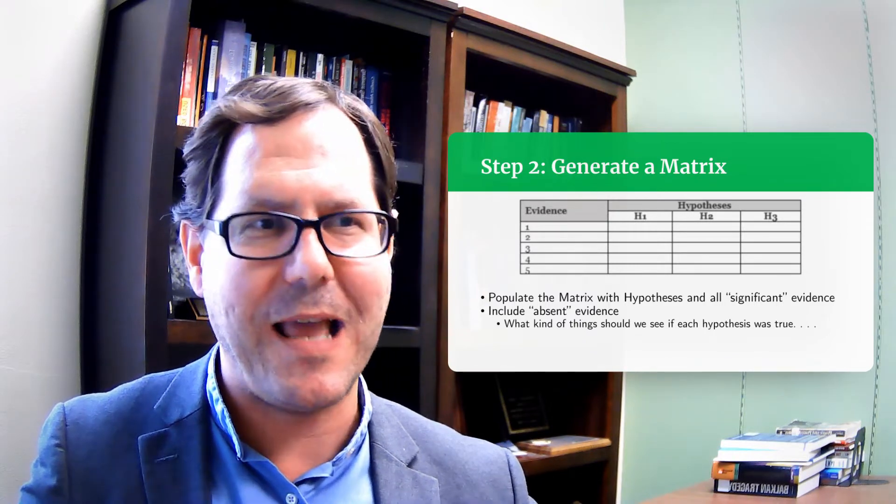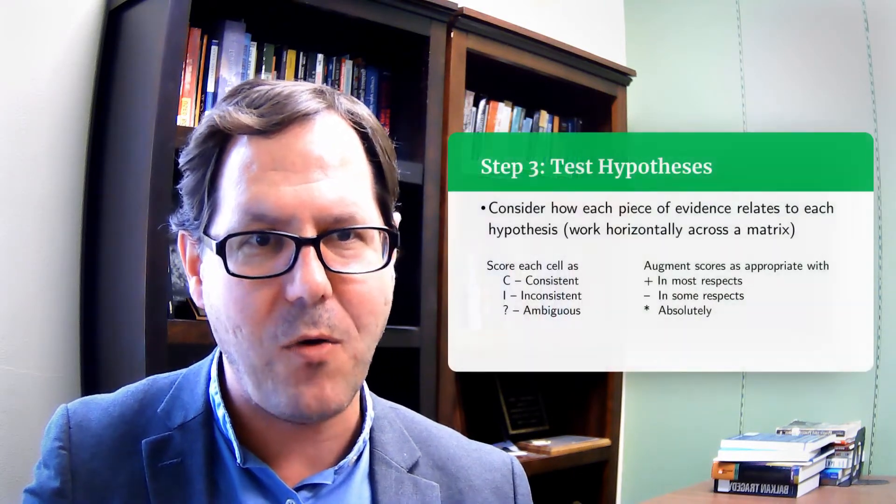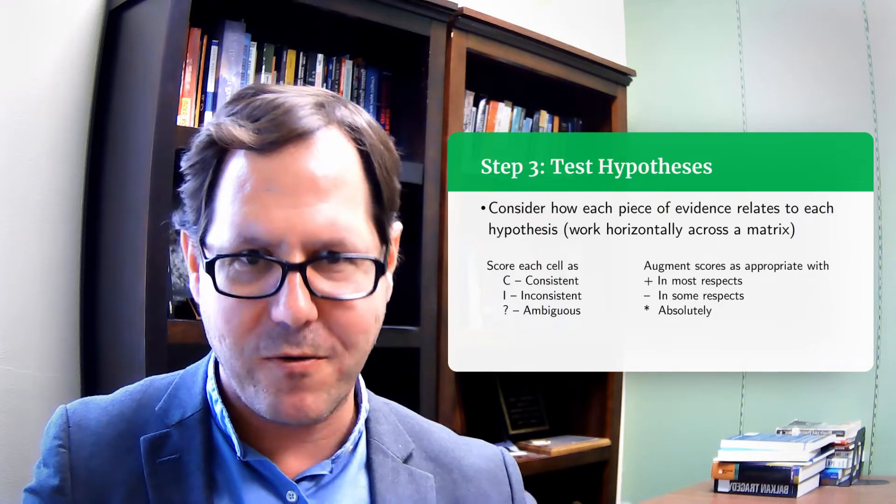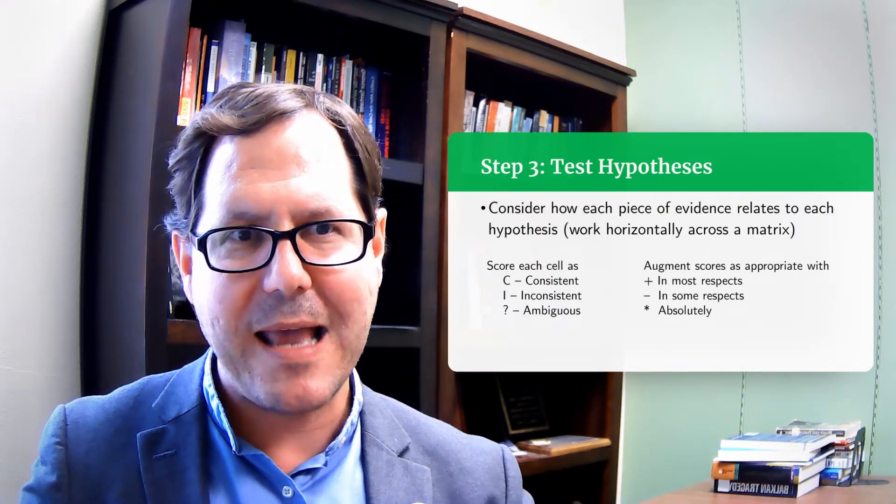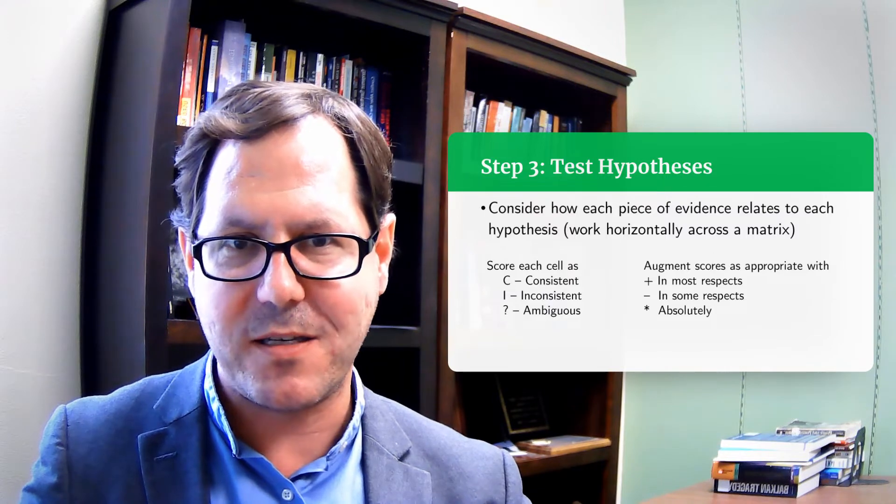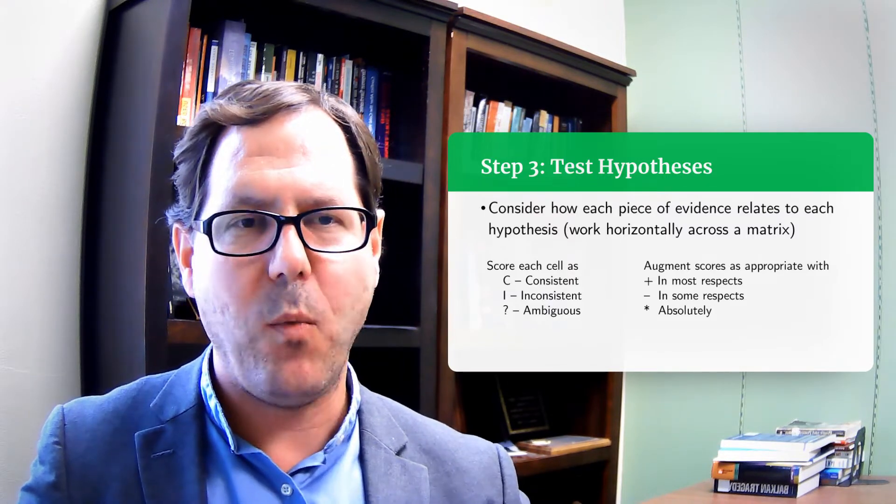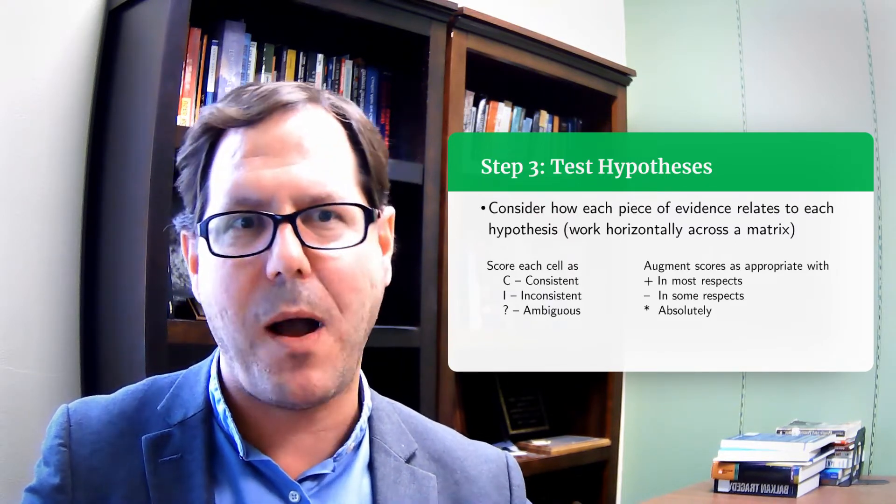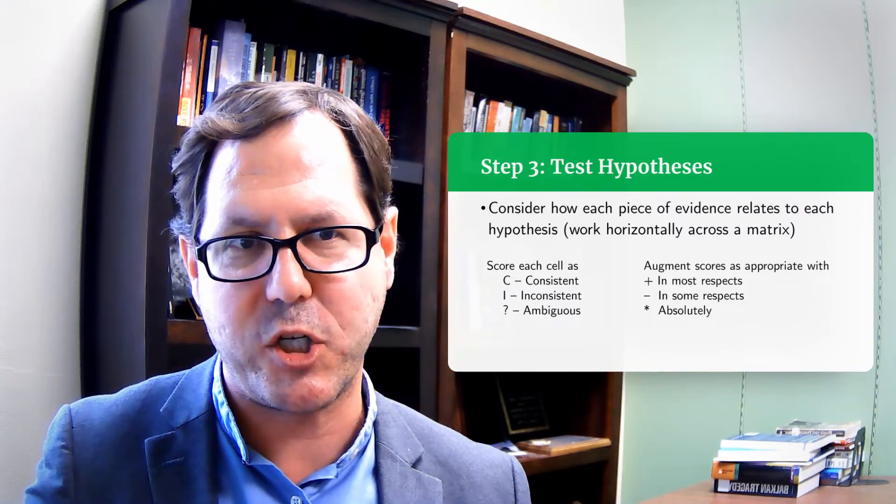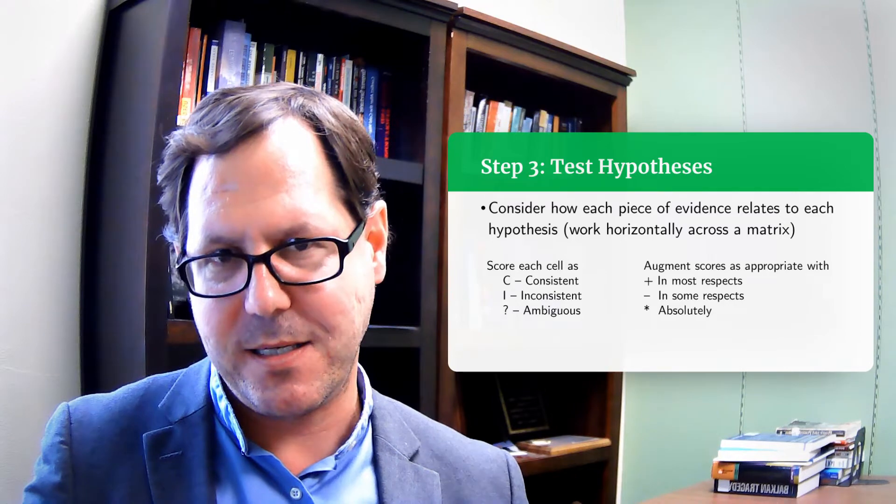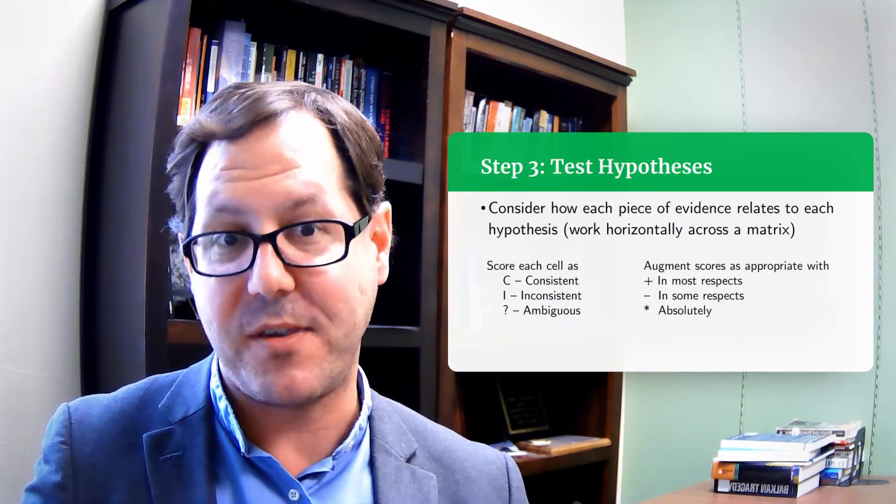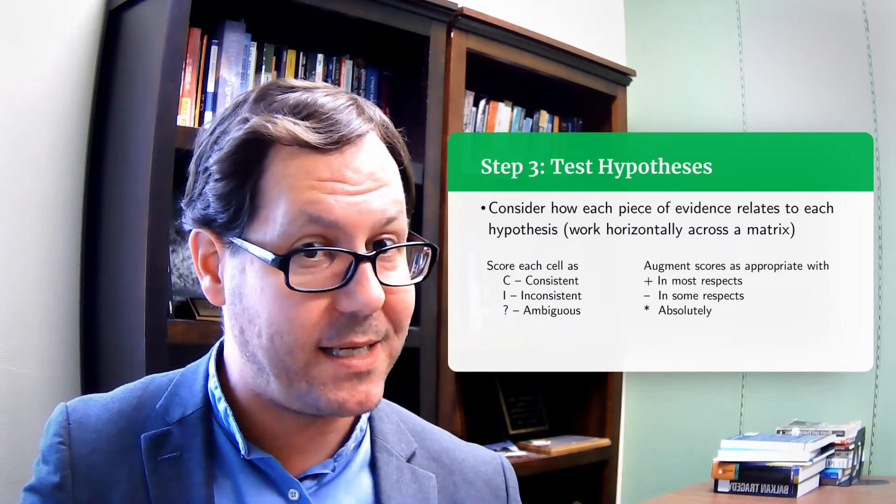So you've got your matrix, you're filling in evidence as you go. And once you've got your evidence populated into rows, then we're going to go through and consider each piece of evidence as a row. And we're going to go through and for each hypothesis, we're going to ask the question, is this piece of evidence consistent with this hypothesis being true or is it inconsistent?